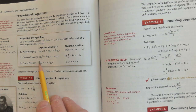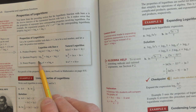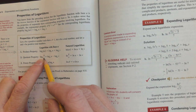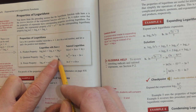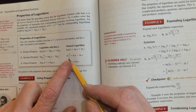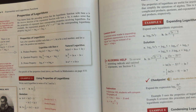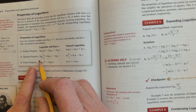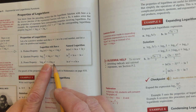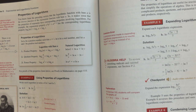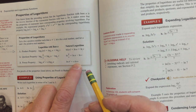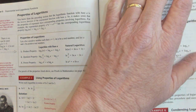If I take a to the seventh divided by a to the second, I subtract. So log base a of u divided by v is log base a of u minus log base a of v. Natural log of u over v is natural log of u minus natural log of v. And for the power property, you bring the exponent in front: log base a of u to the n is n times log base a of u, and natural log of u to the n is n times the natural log of u.